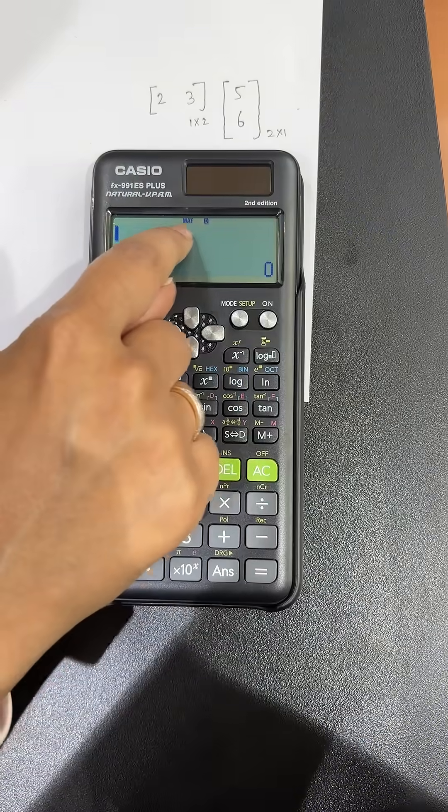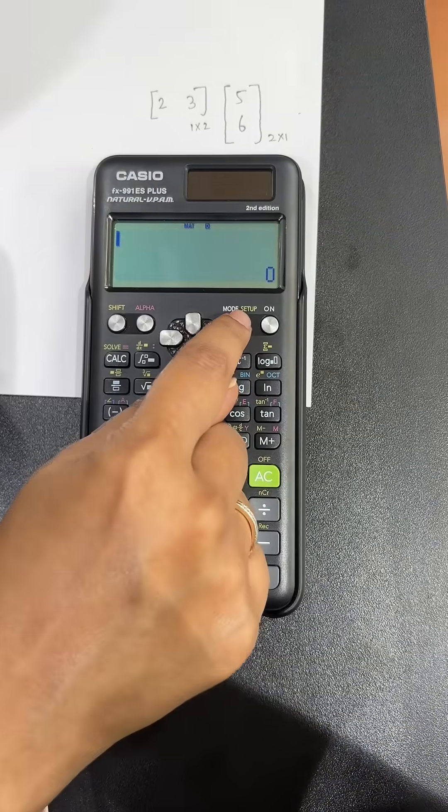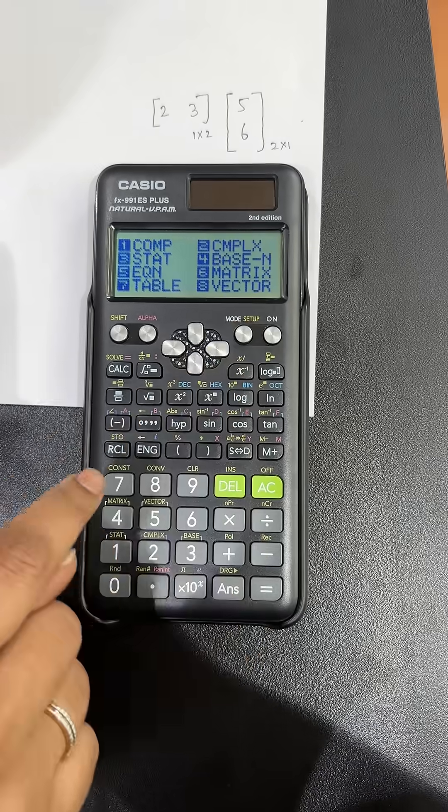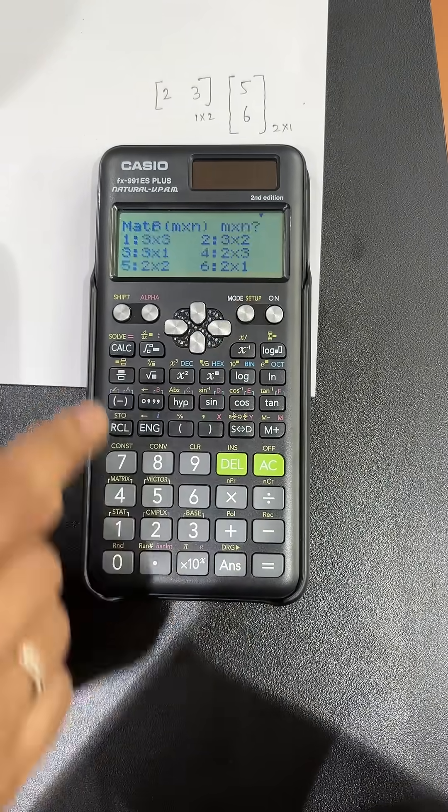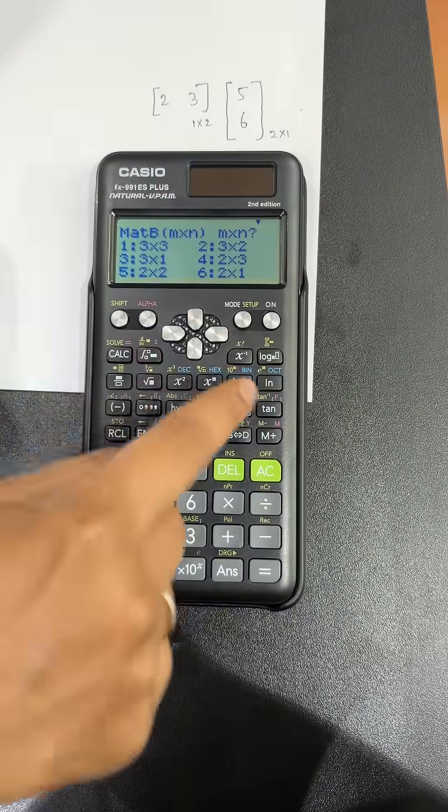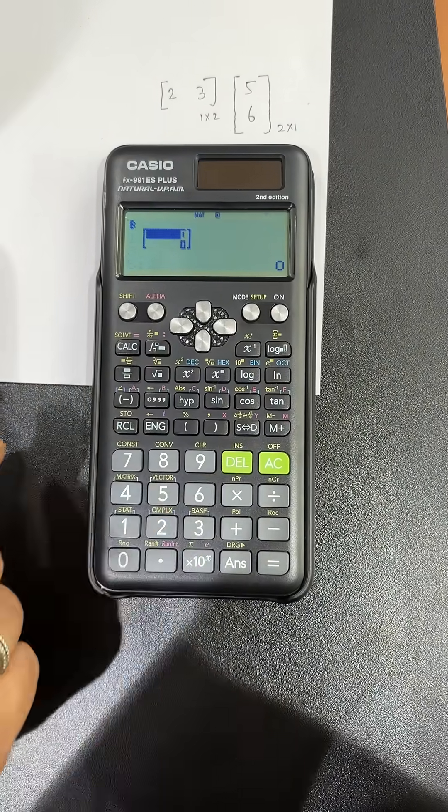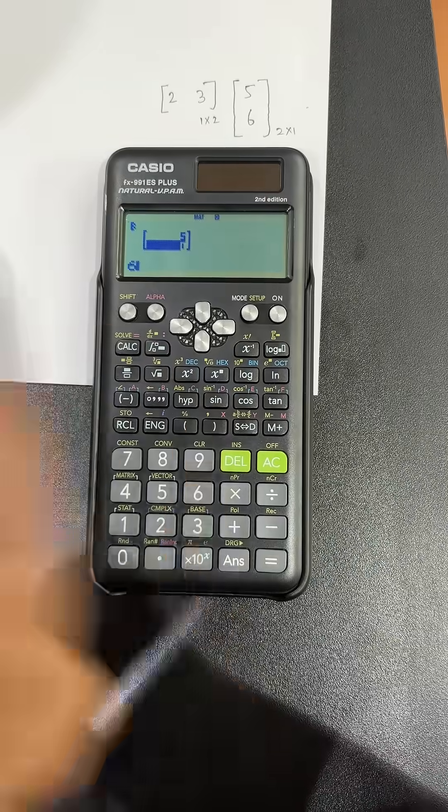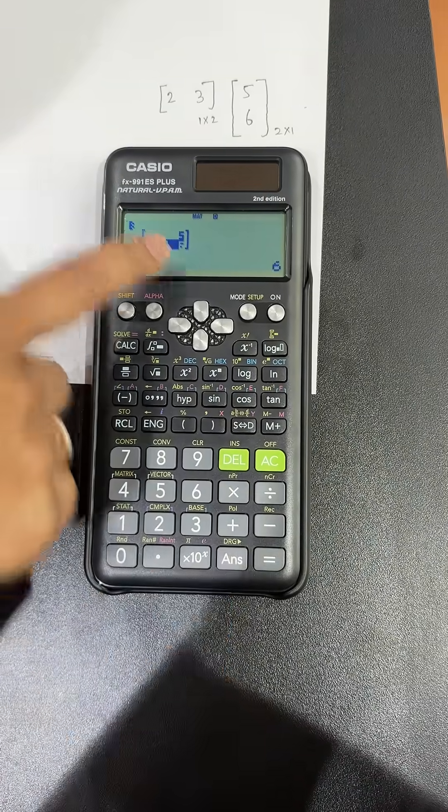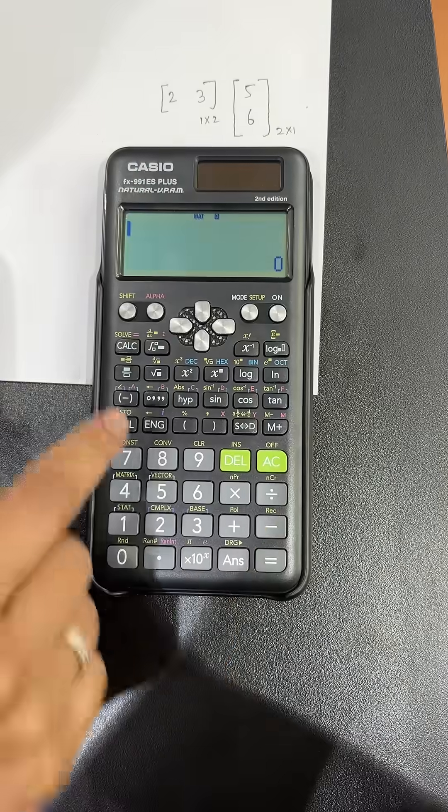You are still in matrix mode, so again you have to click on mode. Move to 6 again. Click on 2. Now this is a 2 x 1 matrix, so we have to select 6, which is 5, equals. Keep pressing equals to move to the next value. Click on equals and you have your matrix B. Click on AC.